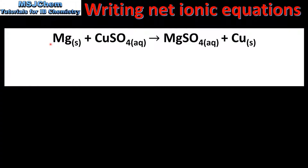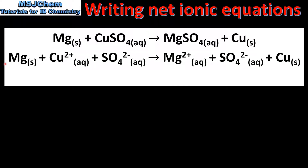In our first example we have the reaction of magnesium and copper sulfate. Here we can see the molecular equation for the reaction. The next step is to write the complete ionic equation. The aqueous copper sulfate has been broken down into copper 2+ ions and sulfate ions. The aqueous magnesium sulfate has been broken down into magnesium ions and sulfate ions. If we look at the oxidation states we can see that the magnesium has been oxidized and the copper 2+ ions have been reduced.